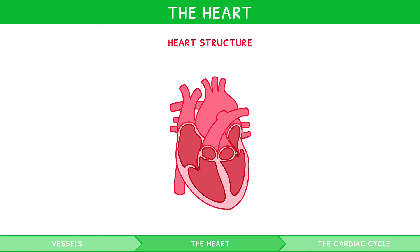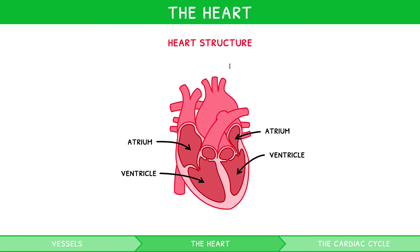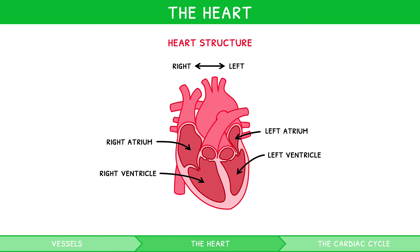The heart consists of four chambers, each connected to a single blood vessel. The top chambers are named atria, whilst the bottom are named ventricles. When naming anatomical structures, it is important to note left and right are used from the patient's perspective, i.e. they're flipped. So the right atria and ventricle are on the left of your diagram, and the left atria and ventricle are on the right. The septum is the tissue dividing the left and right side of the heart.